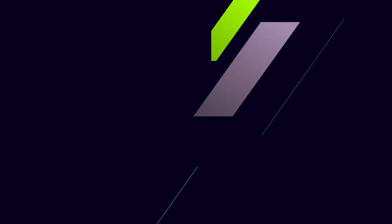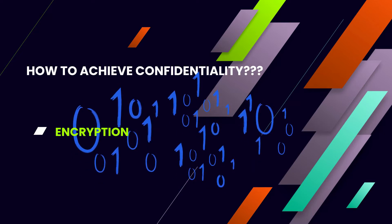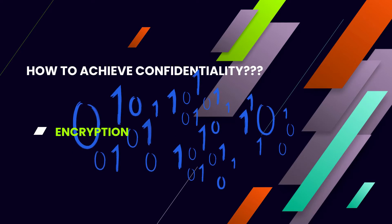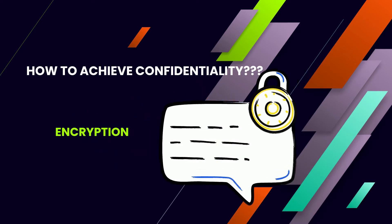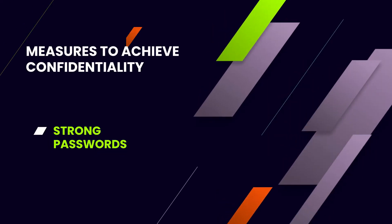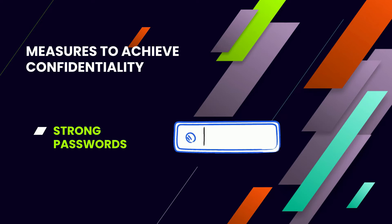To achieve confidentiality of information, companies should be able to implement different types of measures, such as encryption. Encrypting information ensures that even if an unauthorized user is able to get access to the information, they will not be able to read it in an understandable format. Strong passwords reduce the chances of someone being able to access accounts or resources by guessing the password.